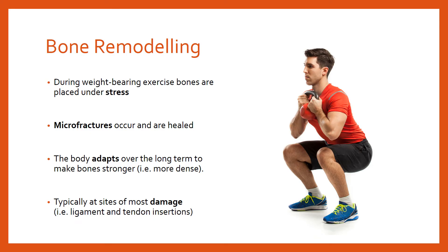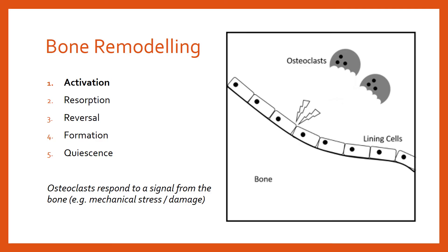There are five stages of bone remodelling. The first is the activation stage. Once a micro-fracture has been caused to the lining of the bone — the periosteum — a signal is sent that damage has occurred. In response, cells called osteoclasts arrive. Their arrival is simply the activation stage.